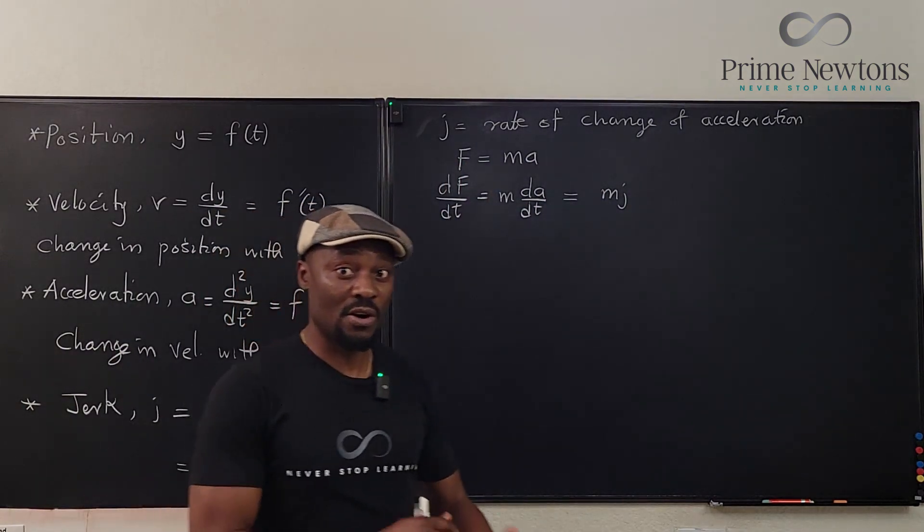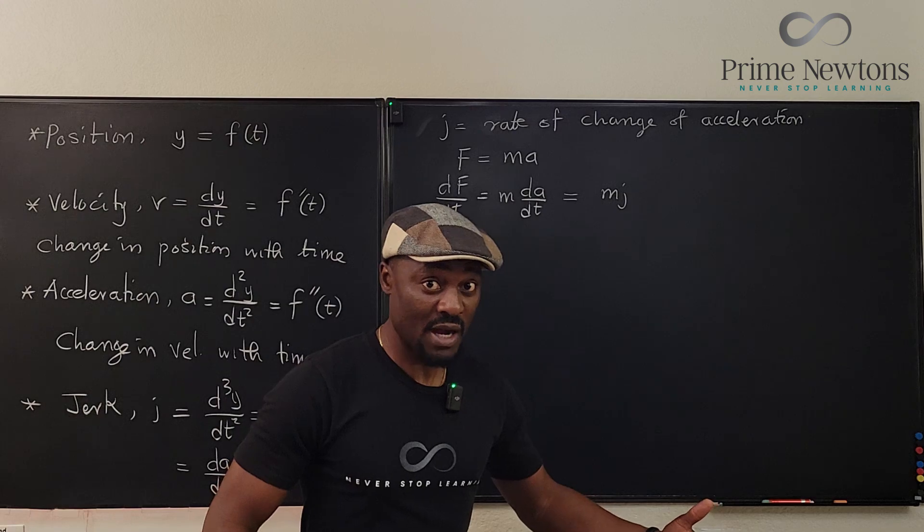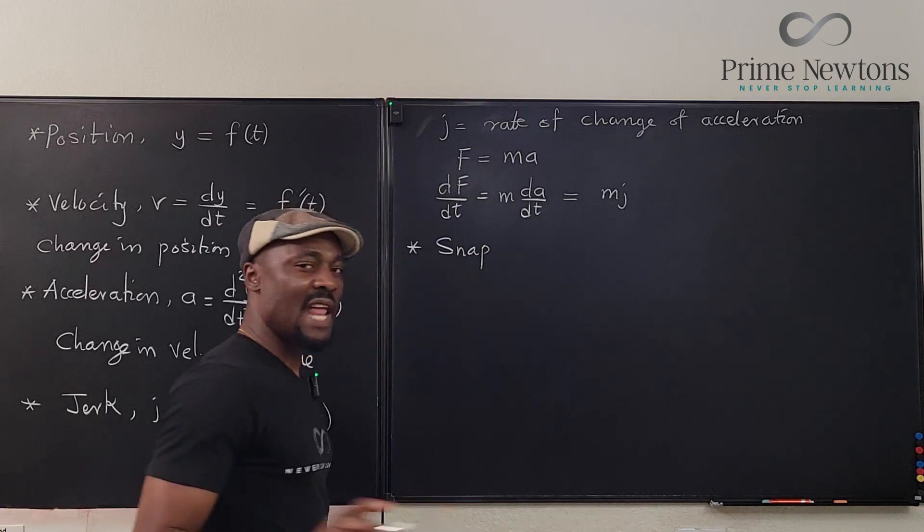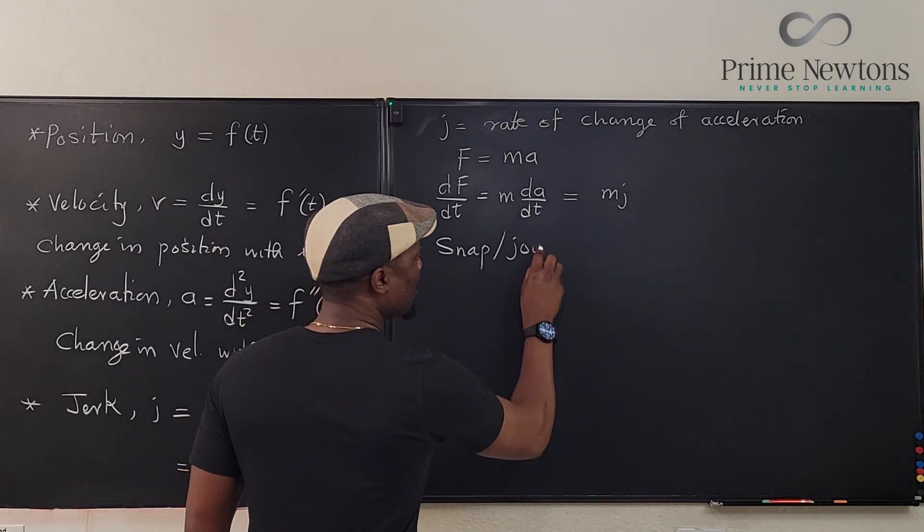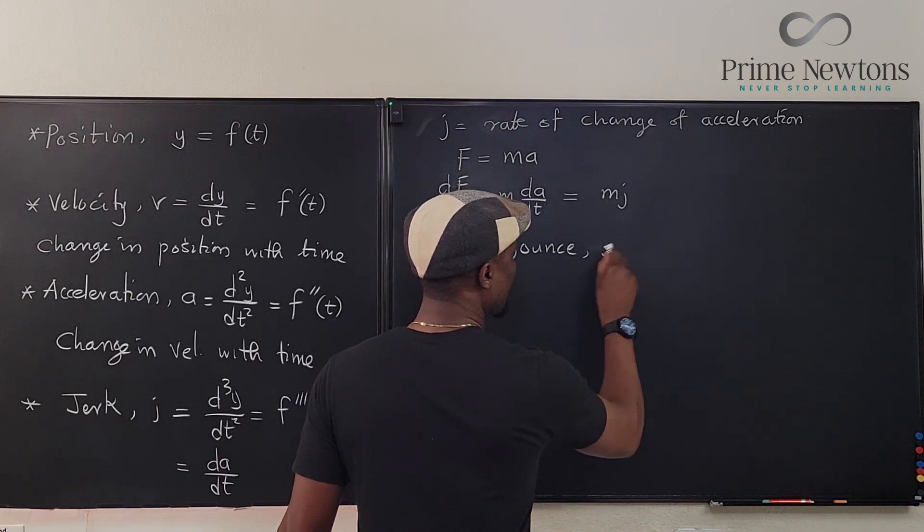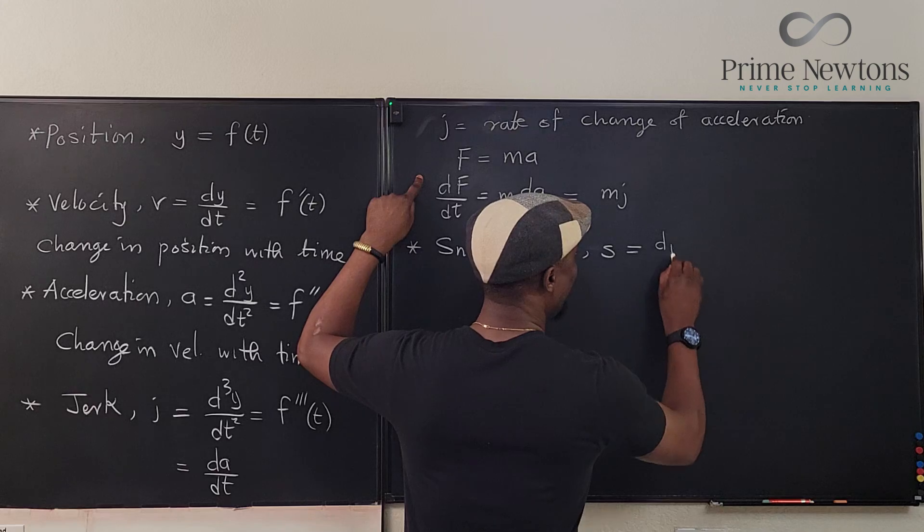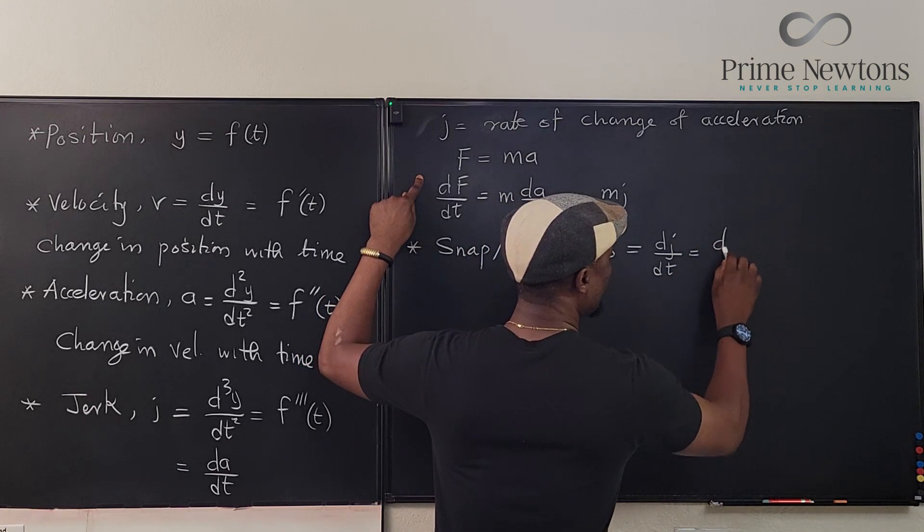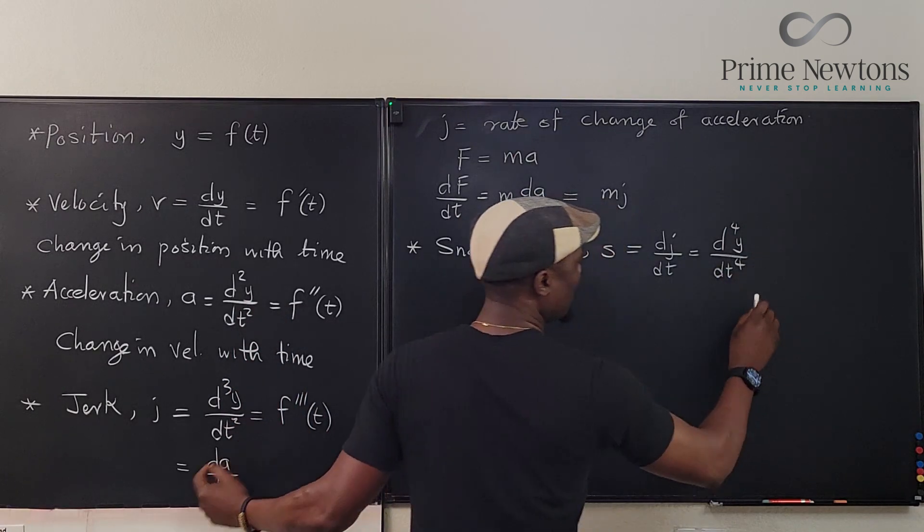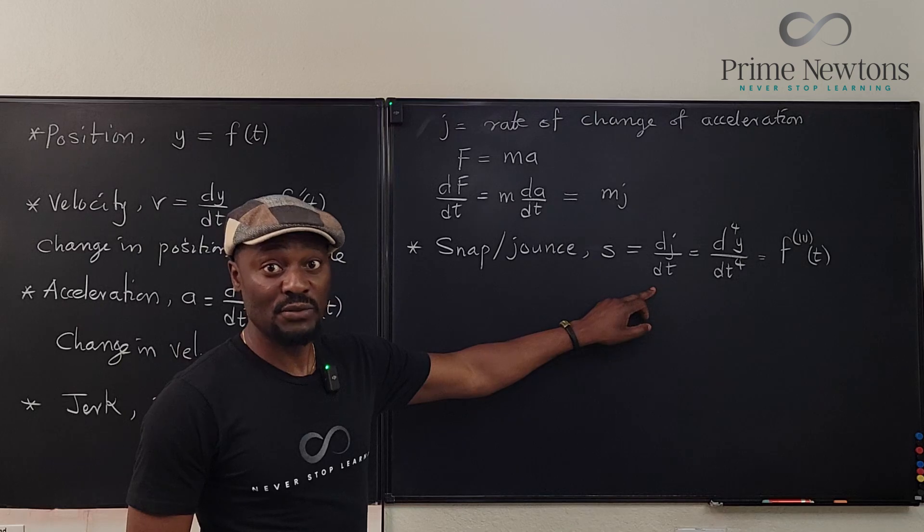Let's go to the next thing. After jerk, the rate of change of jerk of any object is called the snap. So, when you jerk too much, you snap. So we say that the snap. Another word for snap is actually jounce. The symbol for that is small letter s, and it is equal to dj/dt. I'm going to write everything now. dj/dt, which is the fourth derivative of y. We're going to write d⁴y/dt⁴, which is f of t. It is the rate of change of jerk with time.